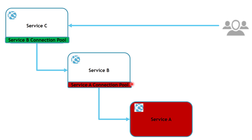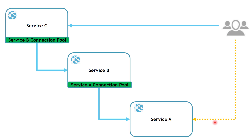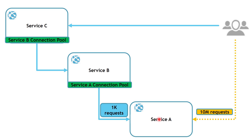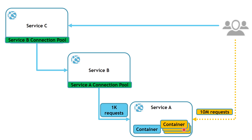Let's see another example. Let's say external clients are sending requests to Service A, as well as internal system calls coming from Service B. The external clients are sending an overwhelming number of requests to Service A compared to Service B's requests. Service A is going to be really busy performing requests from external clients, and it might affect Service A's availability to perform the internal system calls from Service B. What we need to do is implement one container dedicated to external client requests, and another container dedicated to the internal system calls from Service B. When we receive an overwhelming number of external requests, we can scale those containers up as needed.